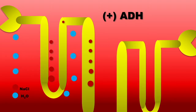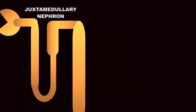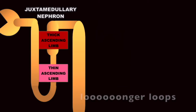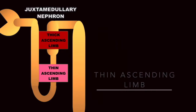The descending limb of Henle is permeable to water but not to sodium. This increases concentration as it goes down the hairpin loop. This is how urine is concentrated in cortical nephrons. Juxtamedullary nephrons are very different from cortical nephrons — the former have longer loops, making them more energy efficient in urine concentration.